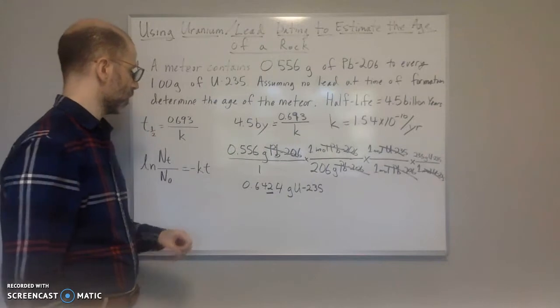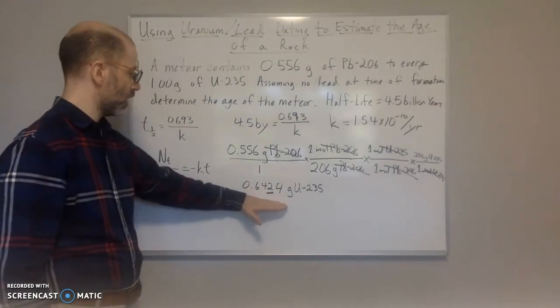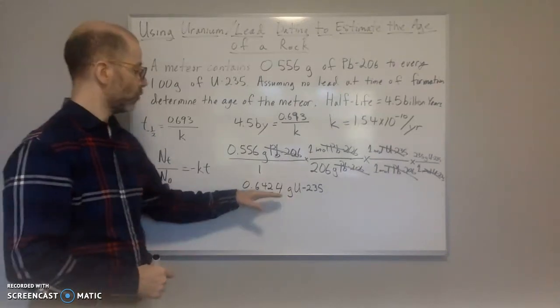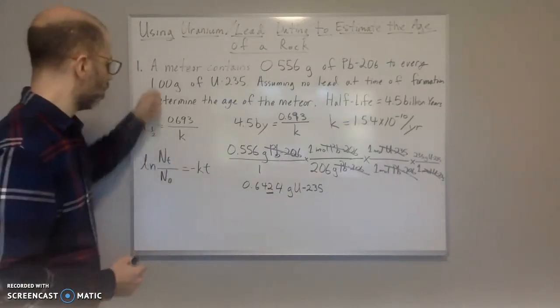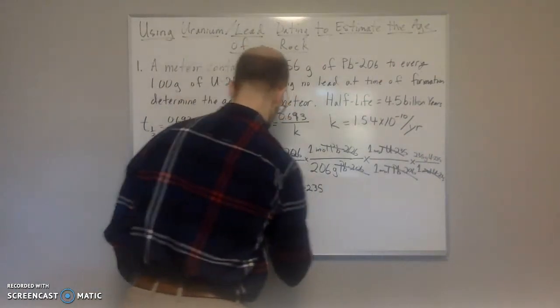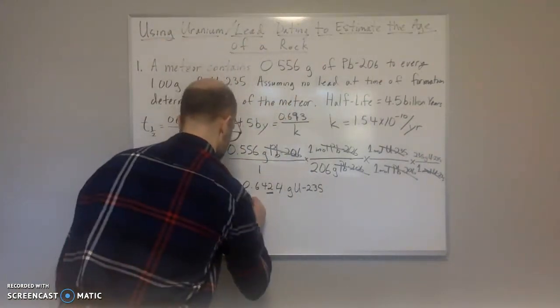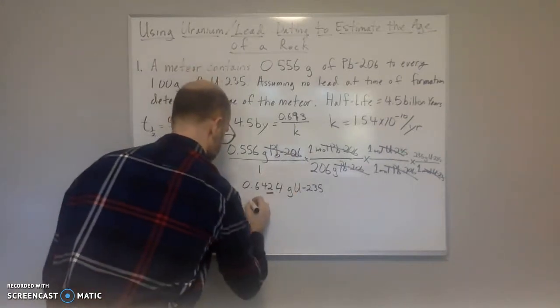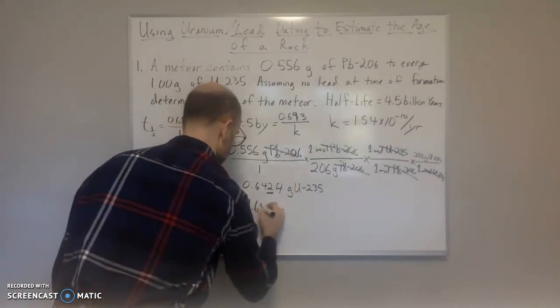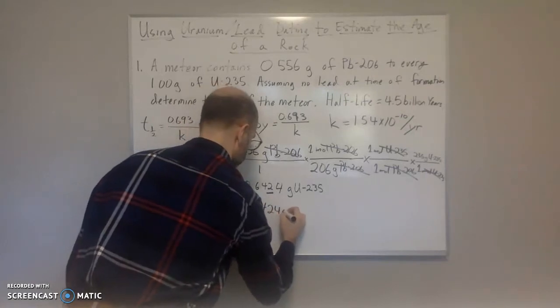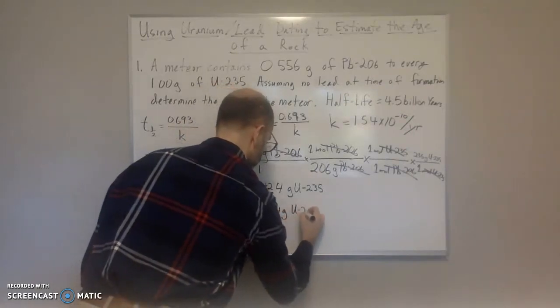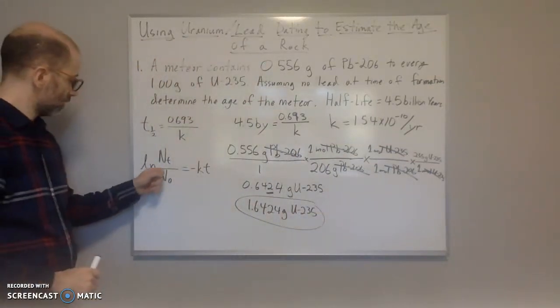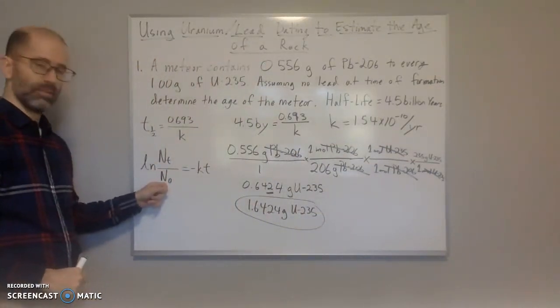So 0.6424 grams of uranium-235. We're only allowed up to the third decimal point because we have three sig figs. Three sig figs is the least number of sig figs. But we're going to keep an extra digit just in case. So now we have grams of the U-235 that decayed. We add that to the 1.